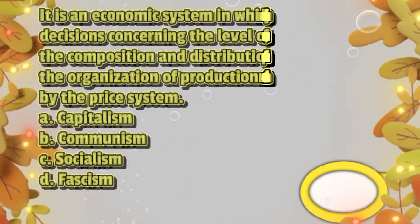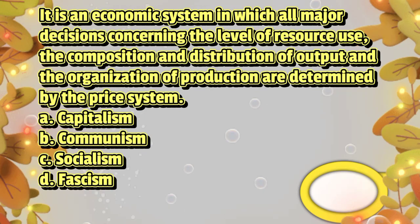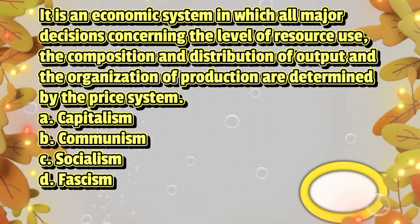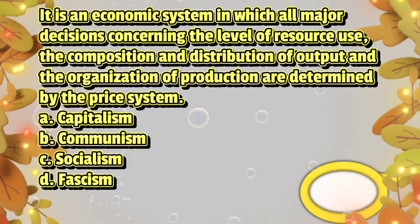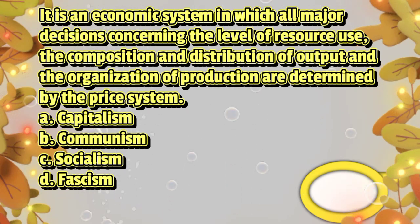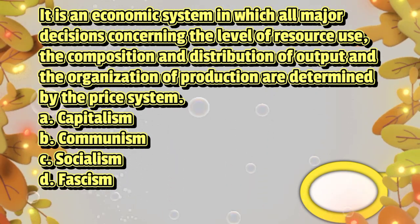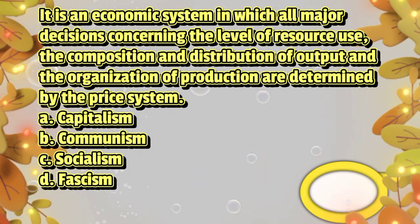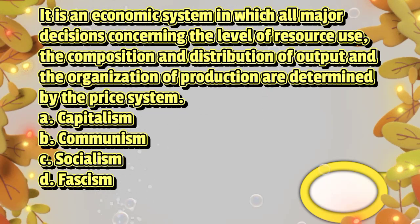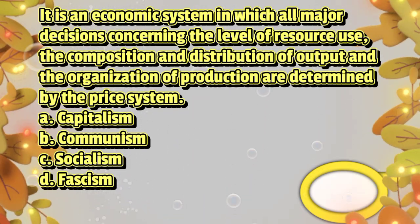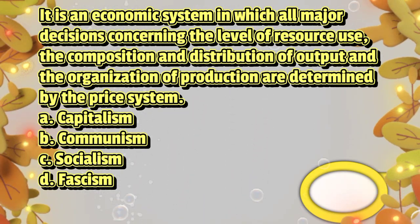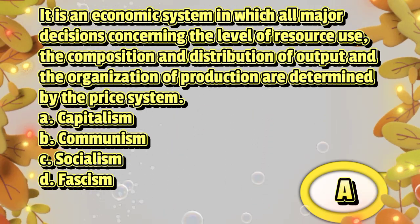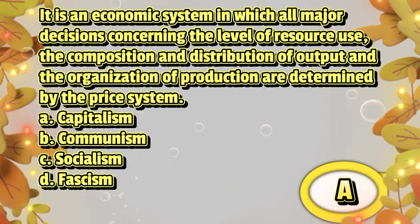It is an economic system in which all major decisions concerning the level of resource use, the composition and distribution of output, and the organization of production are determined by the price system: A. capitalism, B. communism, C. socialism, D. fascism. The answer is letter A.